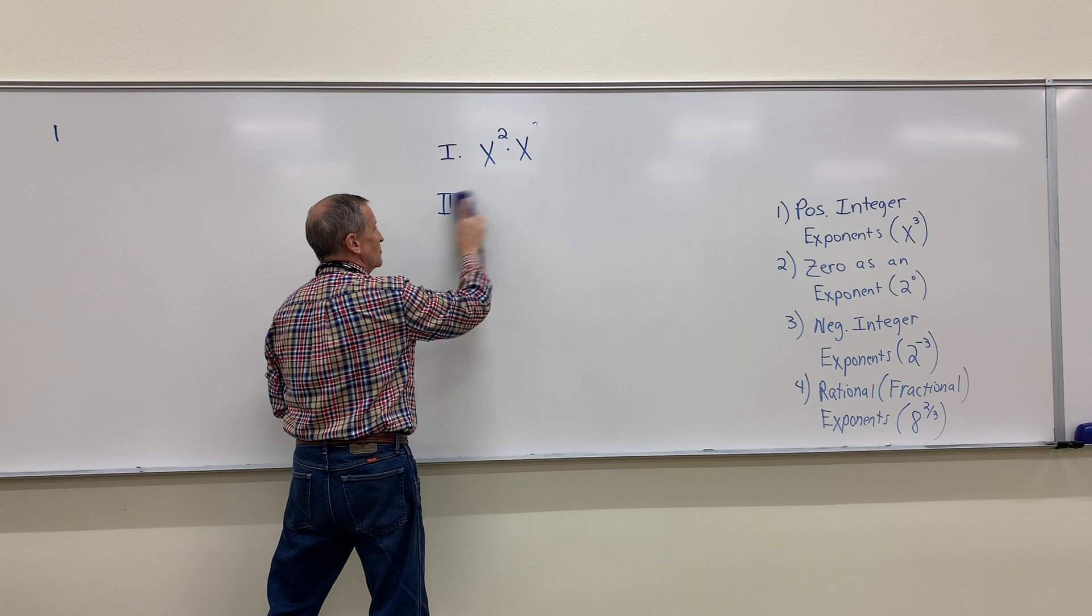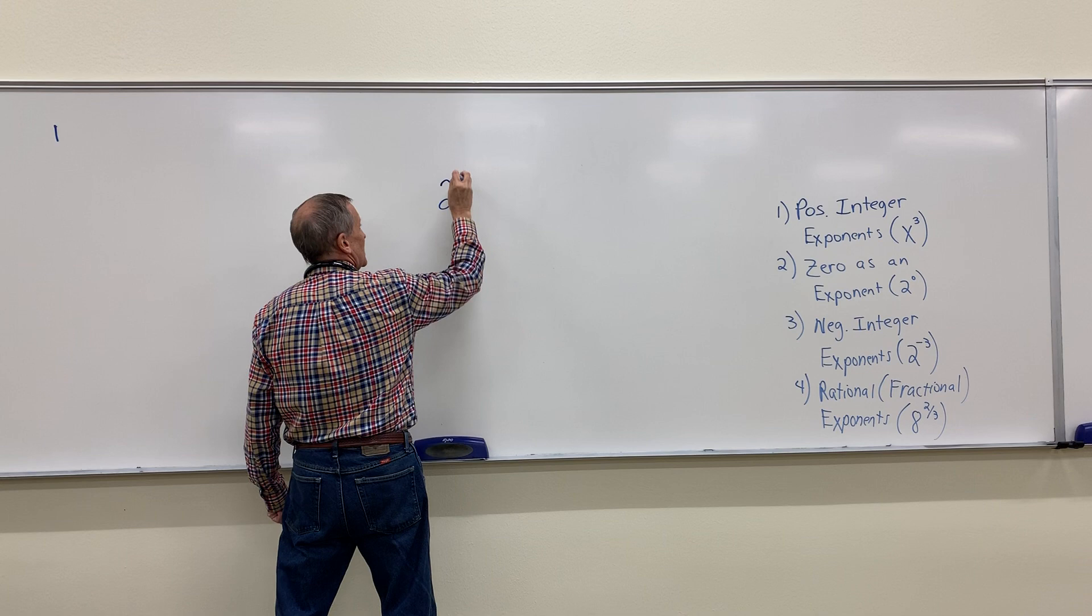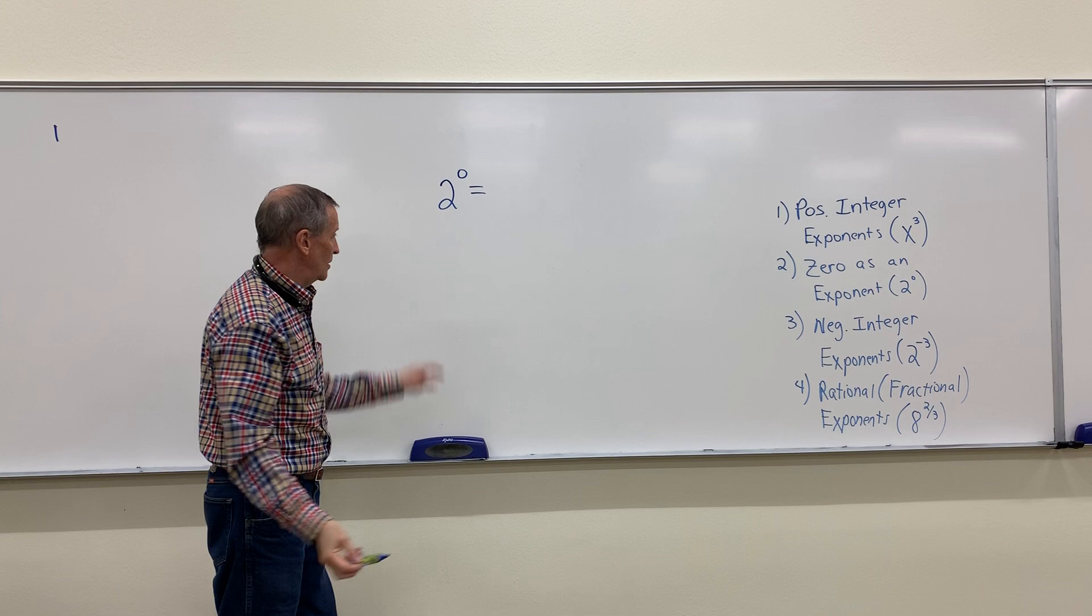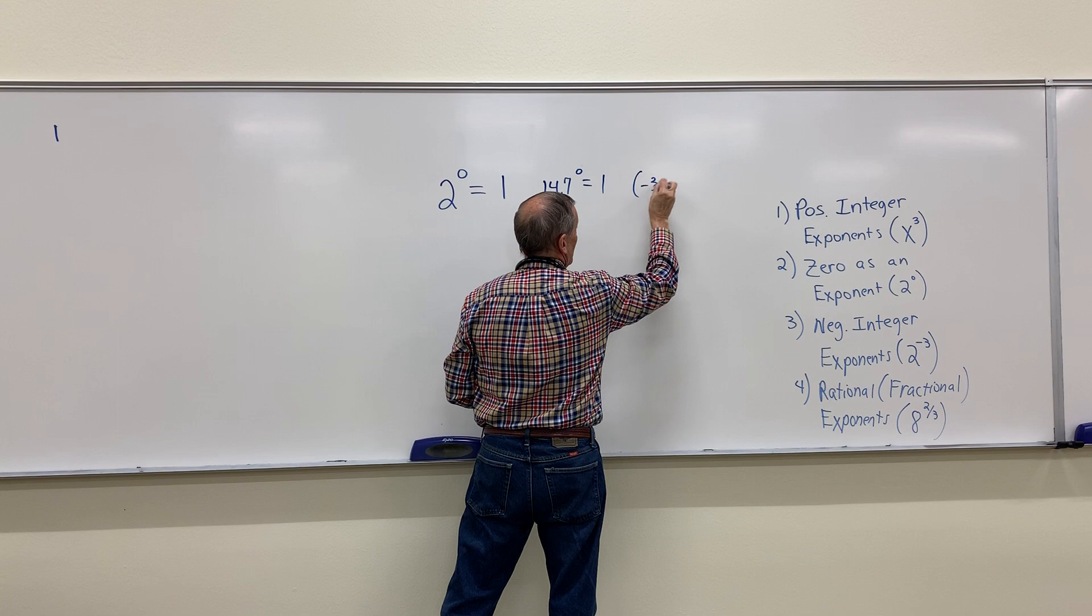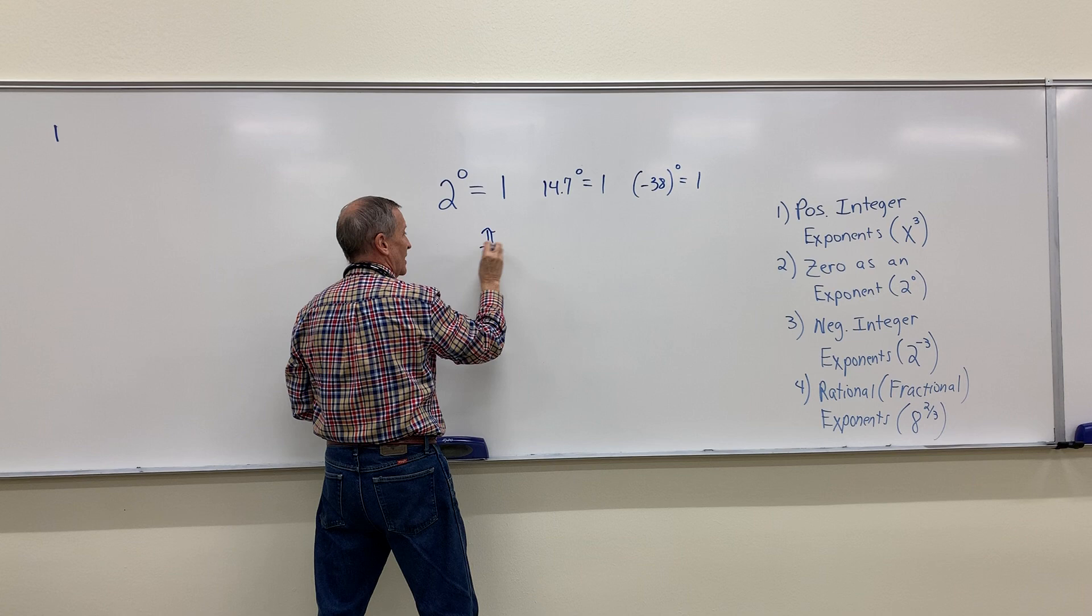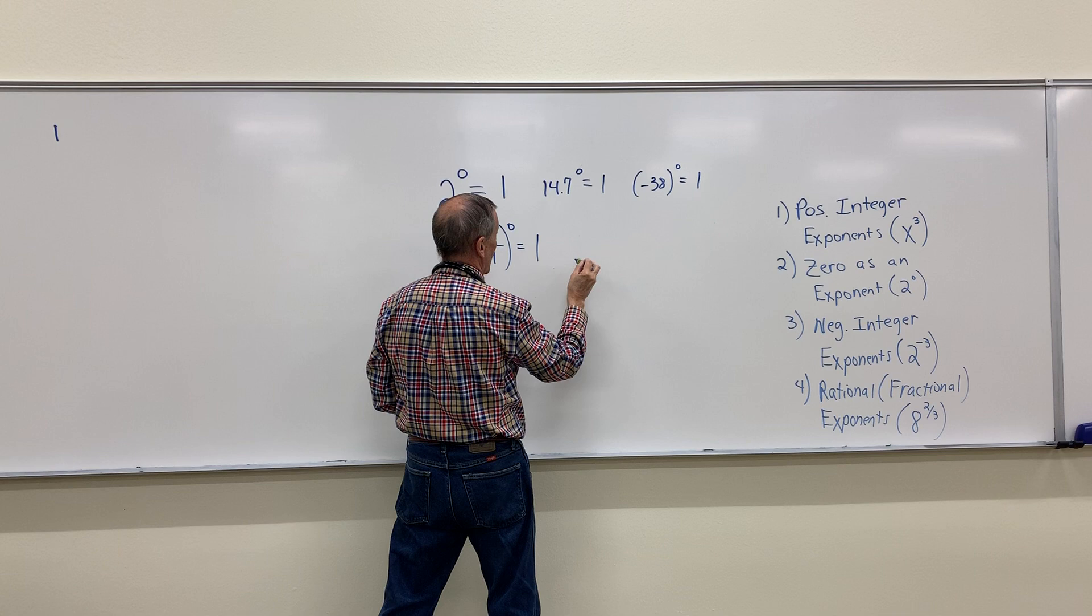And this is one of those instances in which your calculator can always help you out if you happen to forget what something to the zero power is. You probably won't, but if you do, you can actually put 2⁰ into your calculator, and it will tell you that, what do you know, 2⁰ is one. In fact, 14.7⁰ is one. -38⁰ is one. π/11 to the zero power is one. Are you getting an idea? Just about anything. Integers, decimals, fractions, irrational numbers, negative numbers, any real number to the zero power.